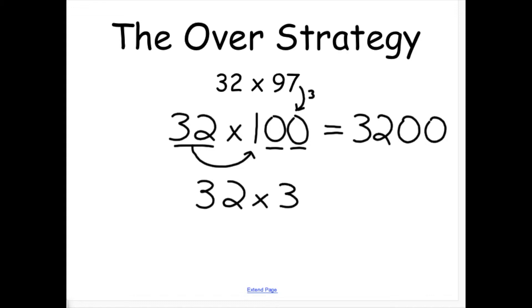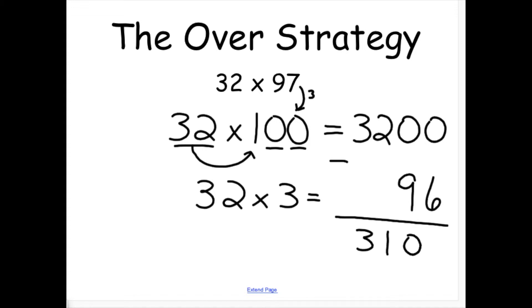If three groups of 32 equals 96, I can subtract 96 from 3,200 to get the answer to my original problem, 32 times 97.